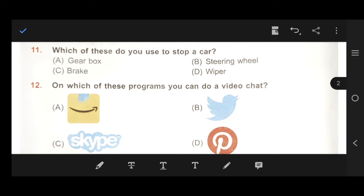Next, number 11, which of these do you use to stop a car? So, our right answer is C, brake. Right answer is C, brake. Number 12, on which of these programs can you do a video chat? Our right answer is C, Skype.